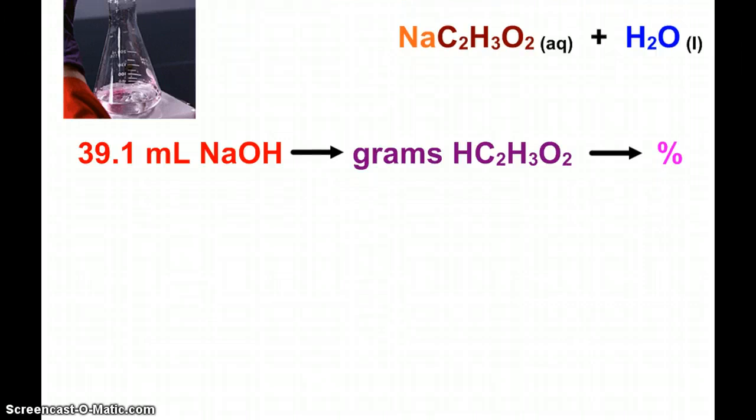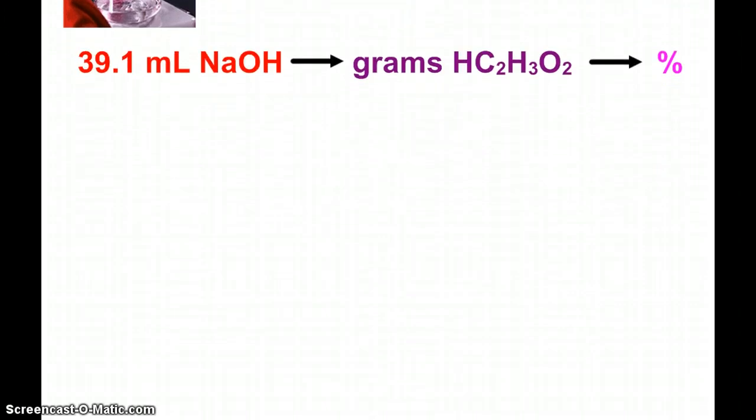Our plan of attack is essentially to take that 39.1 milliliters of sodium hydroxide used to titrate and get that to turn into grams of acetic acid, which we can then use to find the percent in our vinegar sample. So I will start with my volume of sodium hydroxide.